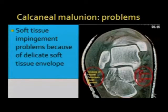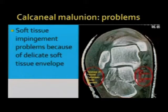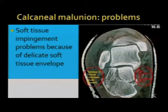Other important problems with calcaneal malunion include soft tissue impingement due to its delicate soft tissue envelope. On the lateral side, a malunited fracture could give rise to pressure over the peronei and calcaneofibular ligament. On the plantar side, it could give pressure to the plantar fat pad causing walking issues. On the medial side, the medial blast of the calcaneal fracture could give rise to FHL tendinitis or pressure over the posterior tibial nerve and secondary tarsal tunnel syndrome.